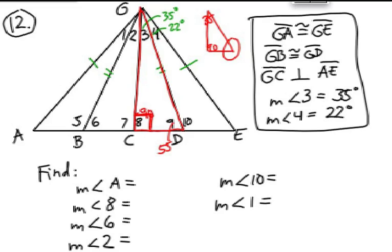Now, Angle 9 is the base angle of this larger triangle. Notice the isosceles triangle there. I have two congruent segments, which makes Base Angle 9 congruent to Base Angle 6. So, 6 must also be 55 degrees.